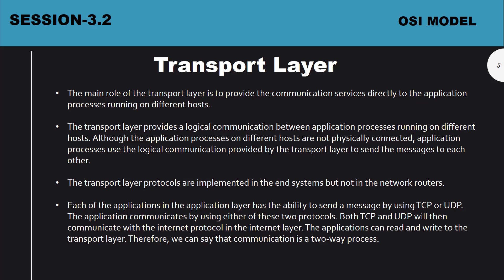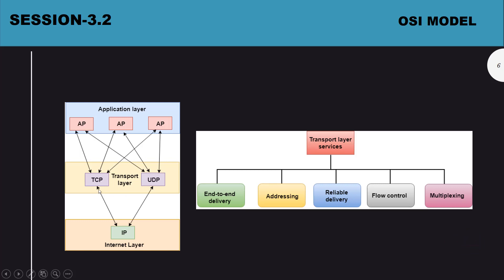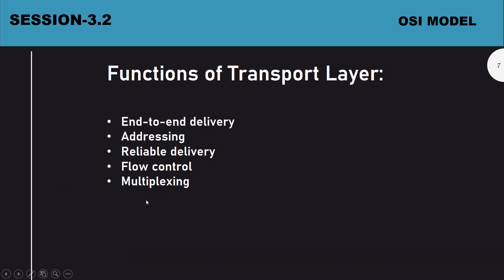TCP and UDP are among the biggest protocols in networking. Coming to the functionalities of the transport layer: end-to-end delivery, addressing, reliable delivery, flow control, and multiplexing — there are many transport layer services. Some applications use TCP and some use UDP, and from there data gets into the IP internet layer.